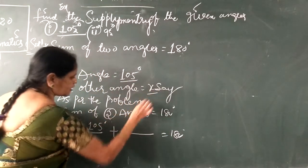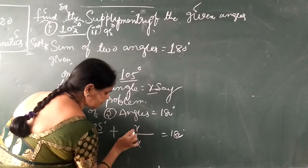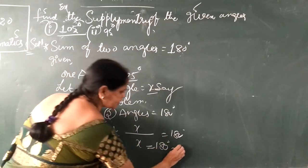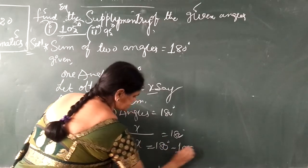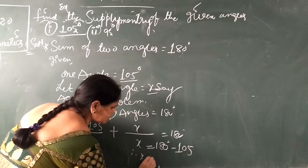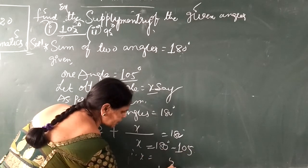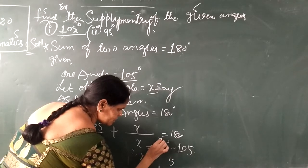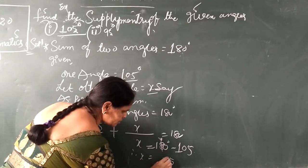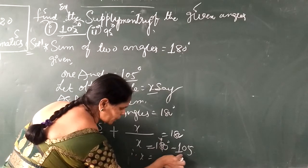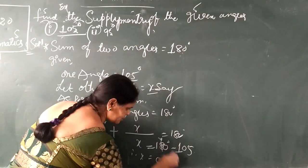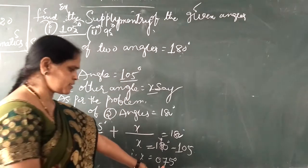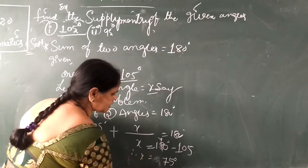The second angle is x, and you have to find the value of x. x is equal to 180 minus 105 degrees. So 10 minus 5 is 5, and from 8 to 10 here, it will be 7. 7 minus 0 is 7, and 1 minus 1 is 0. So that is 75 degrees. The supplementary angle of 105 degrees is 75 degrees.